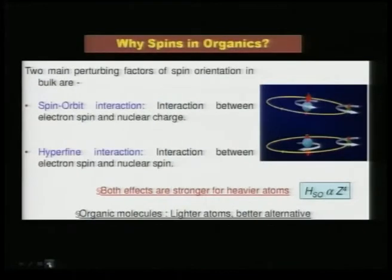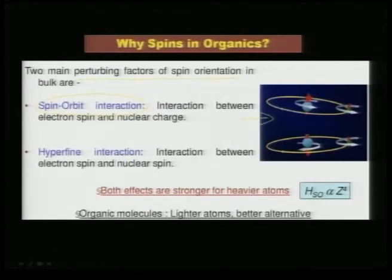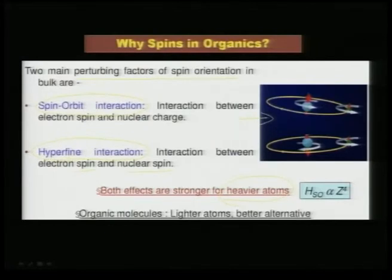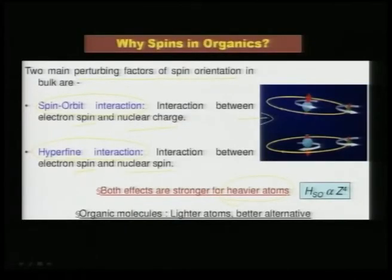Why use spins in organics? There are two perturbing factors of spin orientation in bulk. Number one is spin-orbit interaction — the interaction between electron spin and nuclear charge — which is more pronounced for heavier atoms. Number two is hyperfine interaction — the interaction between the electron spin and the nuclear spin. So you have two issues in multilayer spintronic systems: electron spin interacting with nuclear charge, and electron spin competing with nuclear spin.